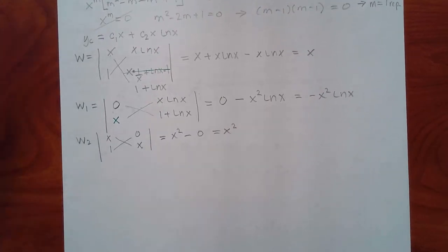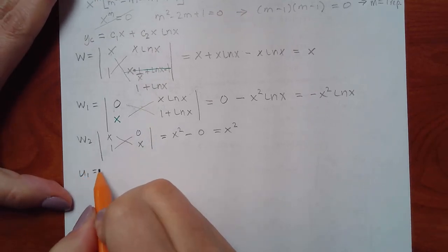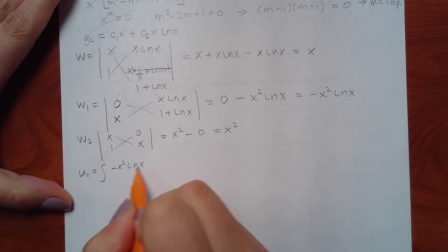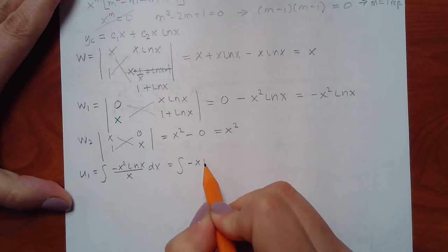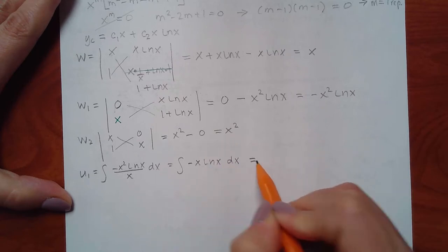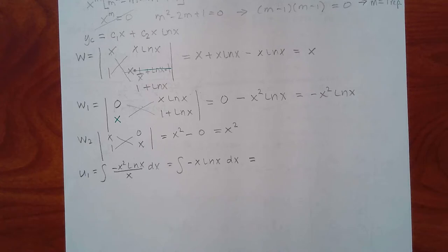For u1: integrate W1 over W — negative x squared·ln(x) over x gives the integral of negative x·ln(x). This requires integration by parts since we can't use the tabular method — ln(x) never has a derivative that diminishes to zero. Let u equal ln(x) so du equals 1/x·dx, and let dv equal negative x so v equals negative x squared over 2.